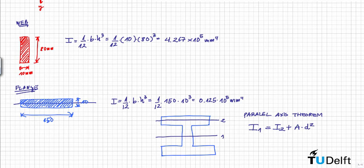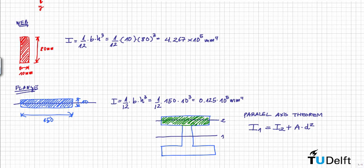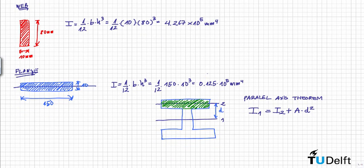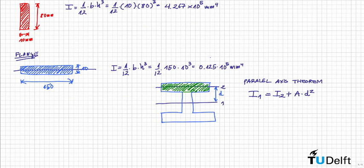So what is A? A is the area of the section — in this case the area of the flange we just calculated. And D is the distance between the two parallel axes. This gives us the moment of inertia of the upper flange with respect to the global Z axis.